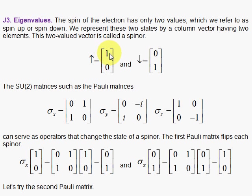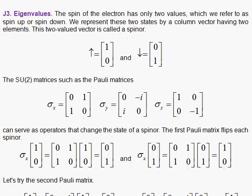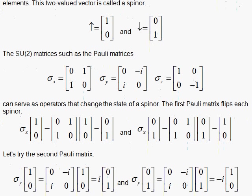Let's look at SU(2) matrices, such as the Pauli matrices, that can act on these spinors and see what happens. We will consider first the X Pauli matrix, 0, 1, 1, 0, and have it operate on this spinor 1, 0. Well, 0 times 1 plus 1 times 0 is 0. 1 times 1 plus 0 times 0 is 1.